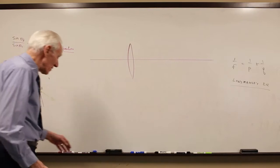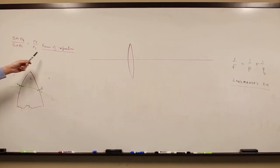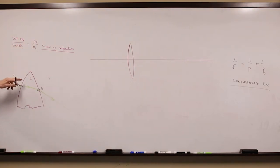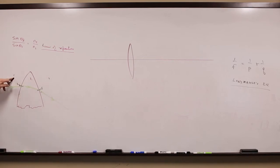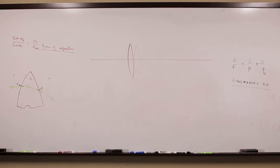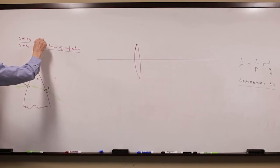The reason it's called a converging lens relates to the law of refraction, which says the sine of the incident angle divided by the sine of the refracted angle is equal to N2 over N1. N2 is the index of refraction of glass, and N1 is the index of refraction of air. N1 is 1 because air has an index of refraction of just about exactly 1, and N2 is a number something like 1.5.